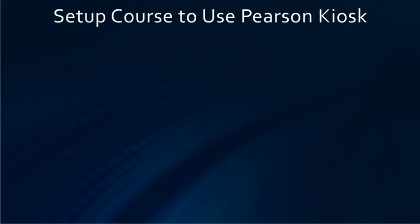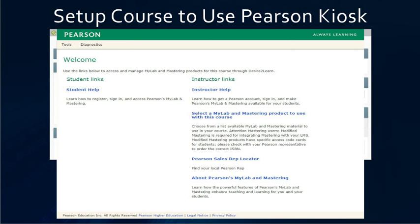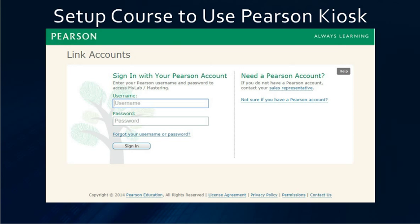Next we will talk about setting up a course to use the Pearson kiosk. You click on the Pearson MyLab and Mastering link from the widget. You will get a popup — click on select a MyLab and Mastering product. You will get another popup; agree to it. Then you will get the login page, so put in your username and password and sign in.